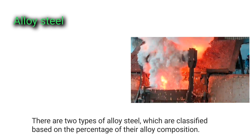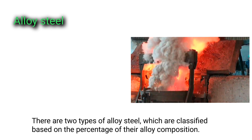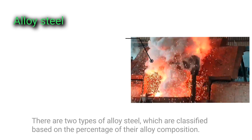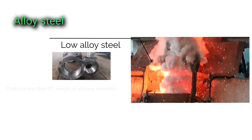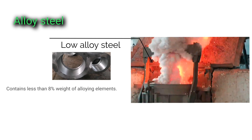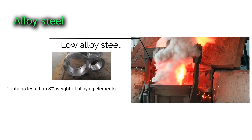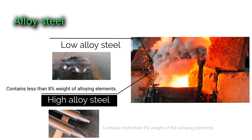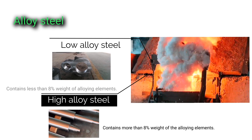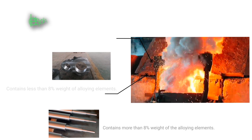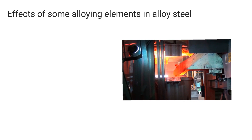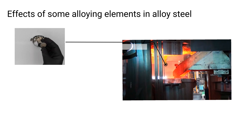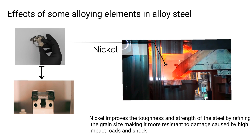There are two types of alloy steel, classified based on the percentage of their alloy composition. One: low alloy steel, which contains less than eight percent weight of alloying elements. Two: high alloy steel, which contains more than eight percent weight of alloying elements. Adding these elements improves the strength, ductility, corrosion resistance, and machinability of the steel.